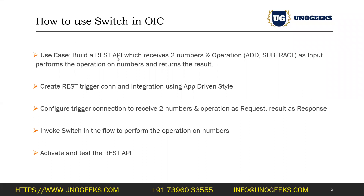We'll build a simple REST API which will receive two numbers as input, number one and number two. Along with those numbers we'll also receive an operation as input. To keep it simple, we'll receive operations like add, subtract, etc. Within the API we will use a switch operator to look at the operation that the user has passed, and the API will have multiple branches within it based on the operation, and the request gets directed to the appropriate branch.